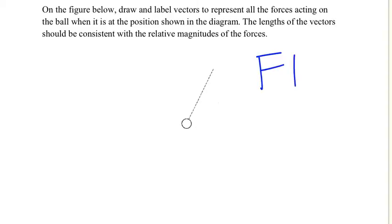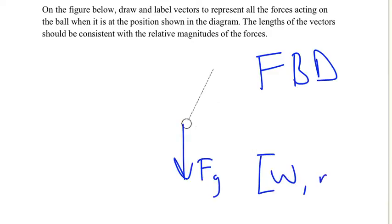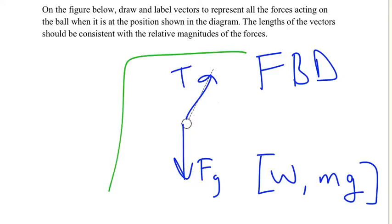For this question, I am going to be drawing the free body diagram and I am going to start with the force of gravity, which we also call gravitational force and can be shown as W or Mg as well. When it comes to the tension force, tension force is always right along the string and this is the answer to this question.